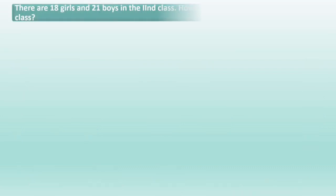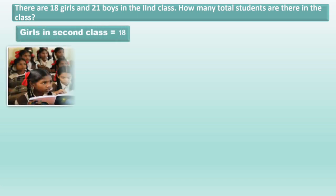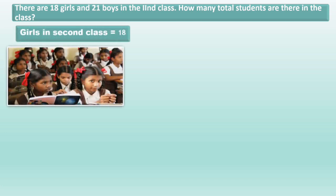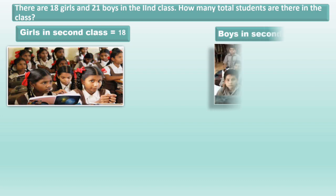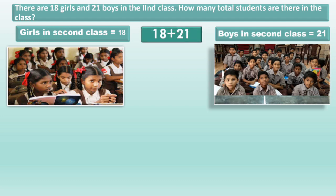There are 18 girls and 21 boys in the second class. How many total students are there in second class? In second class, number of girls is 18 and number of boys is 21. We will add 18 and 21 to find out the number of students in second class.